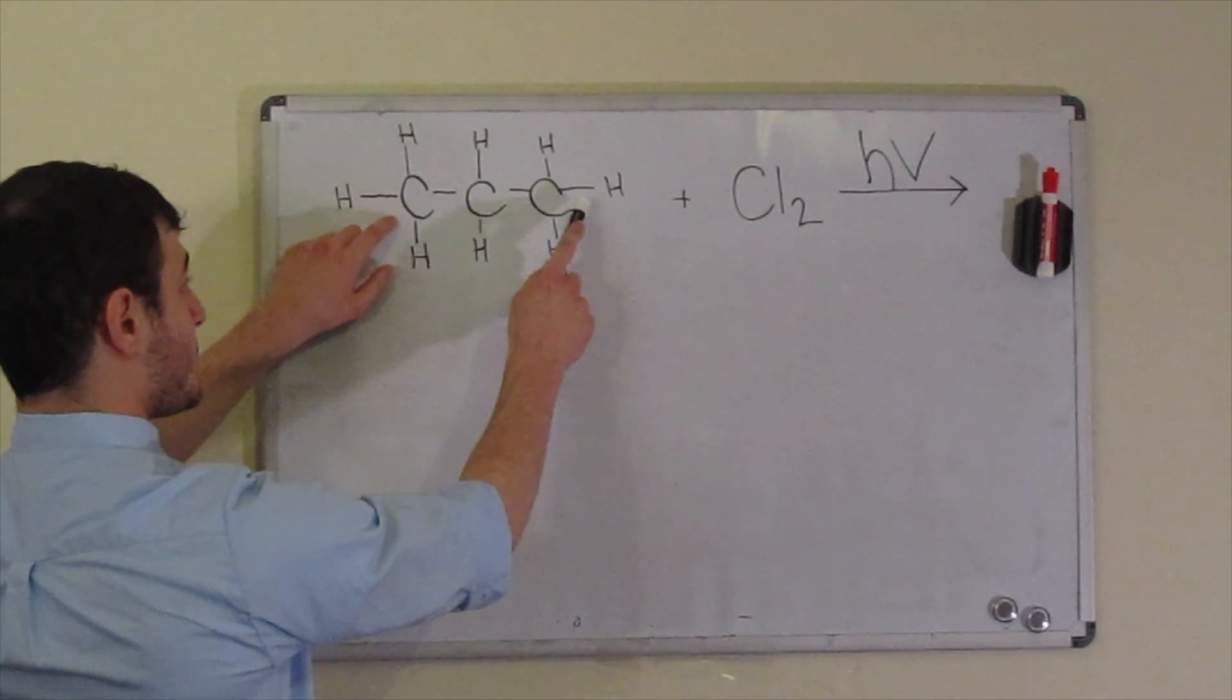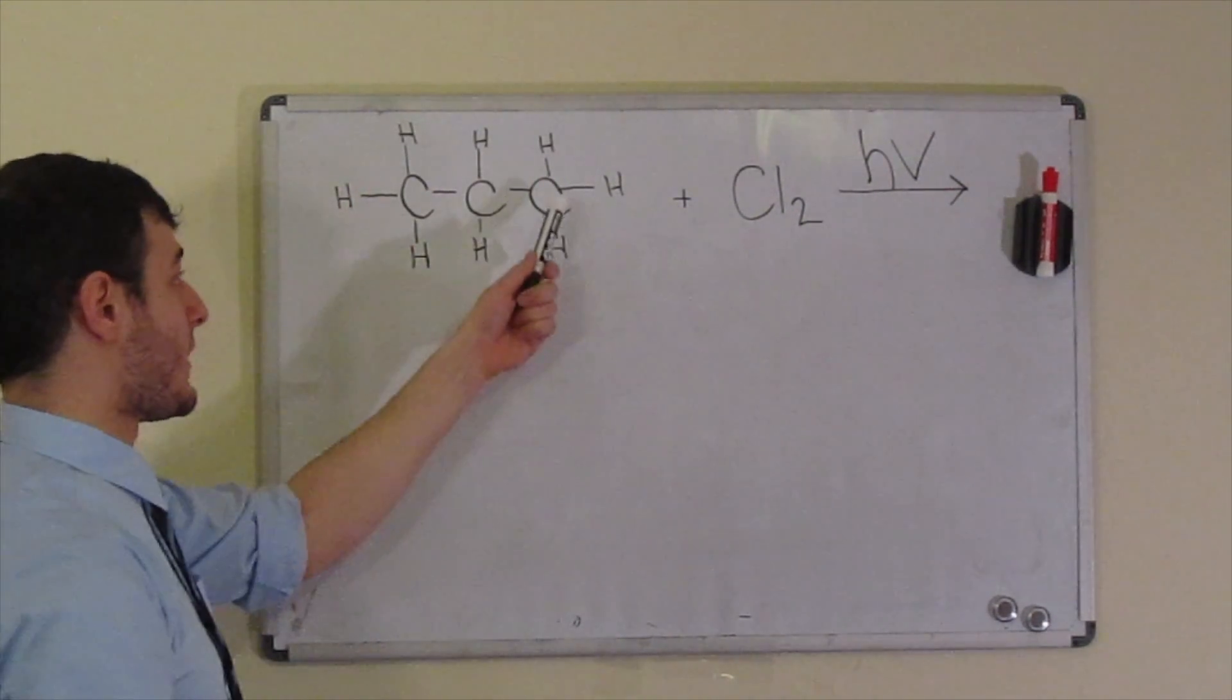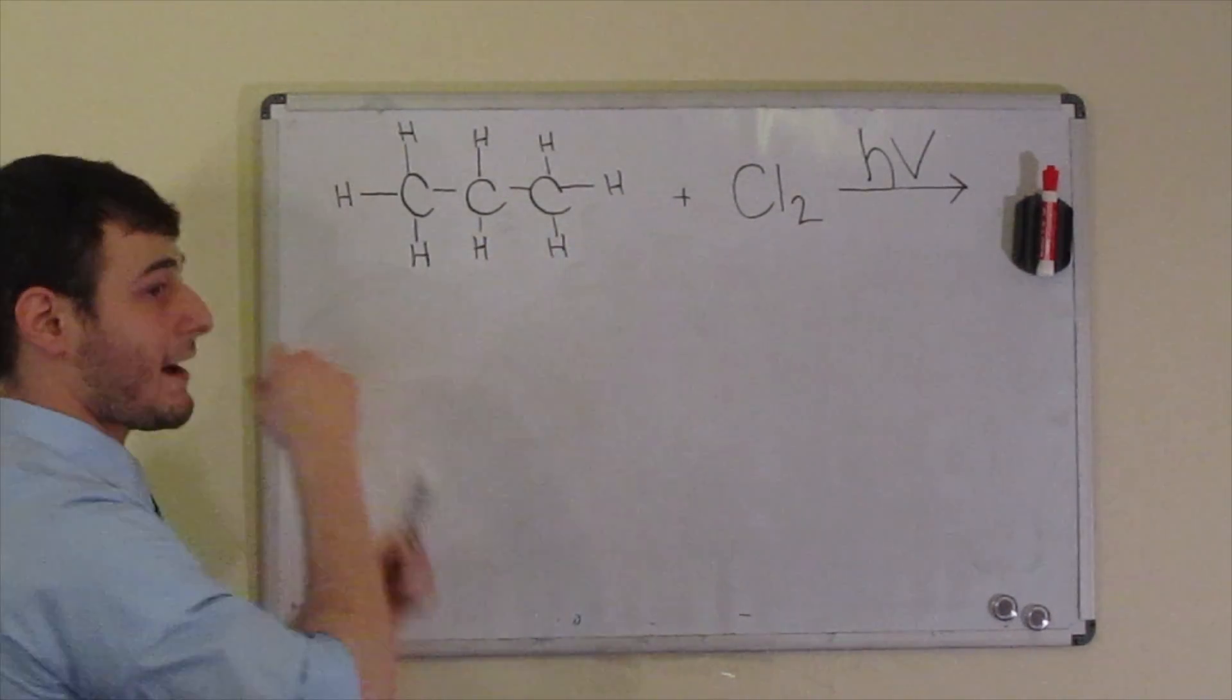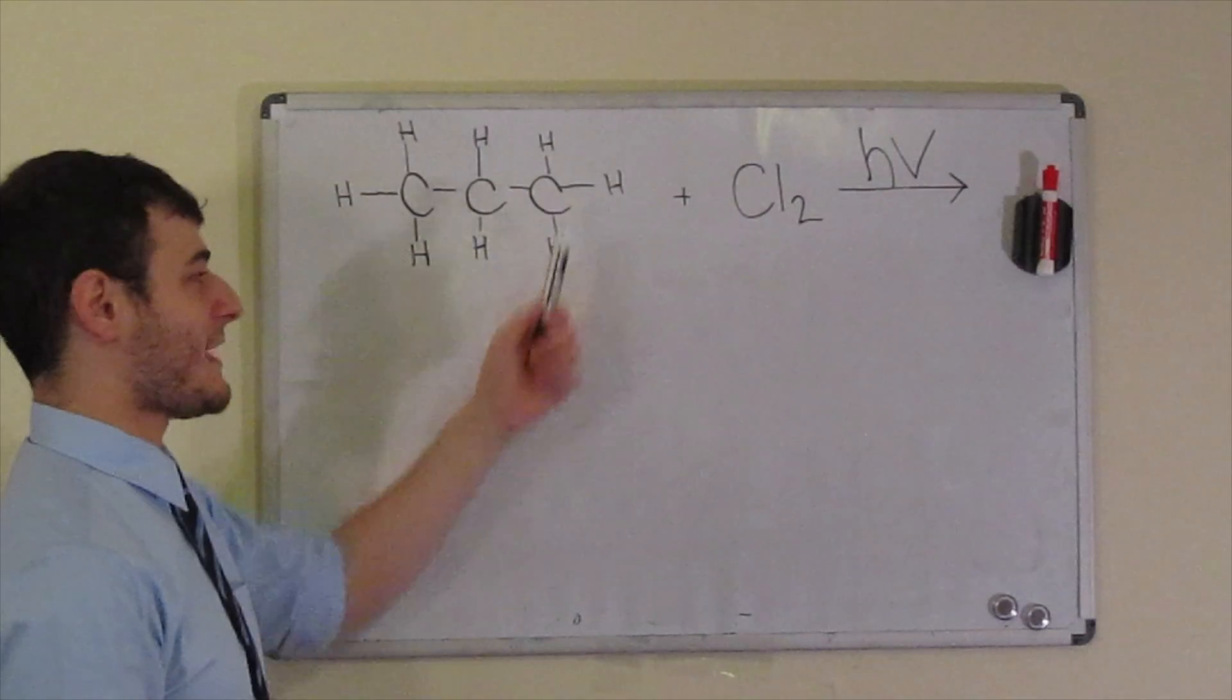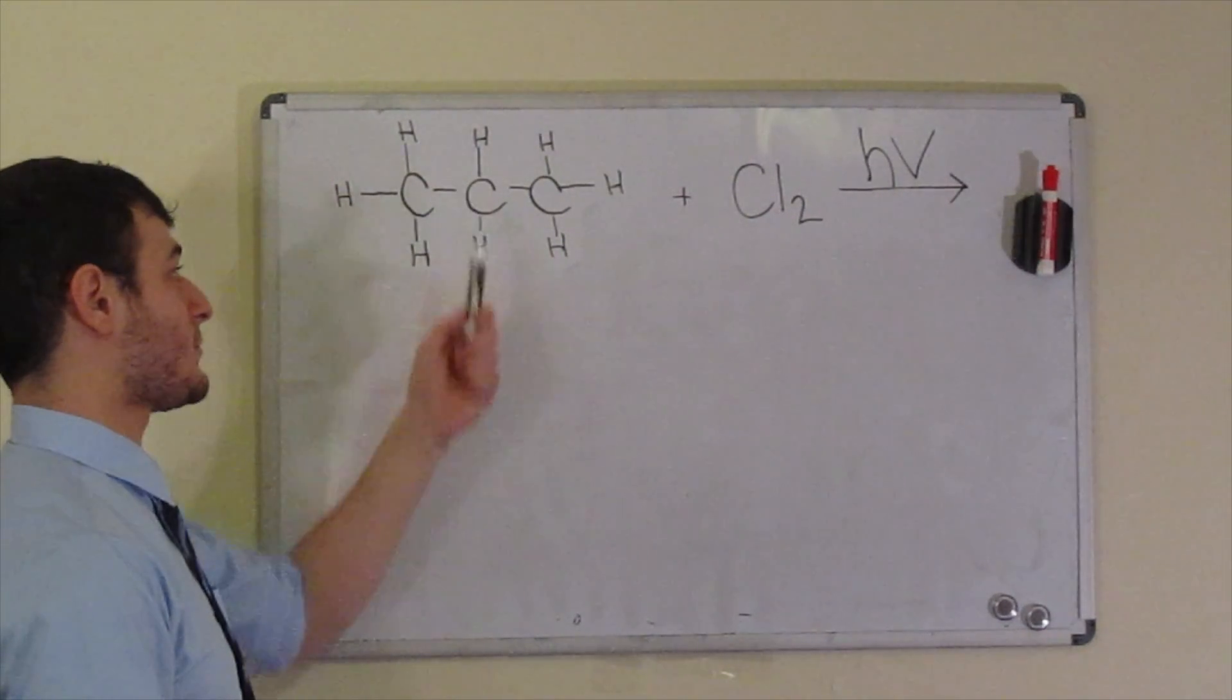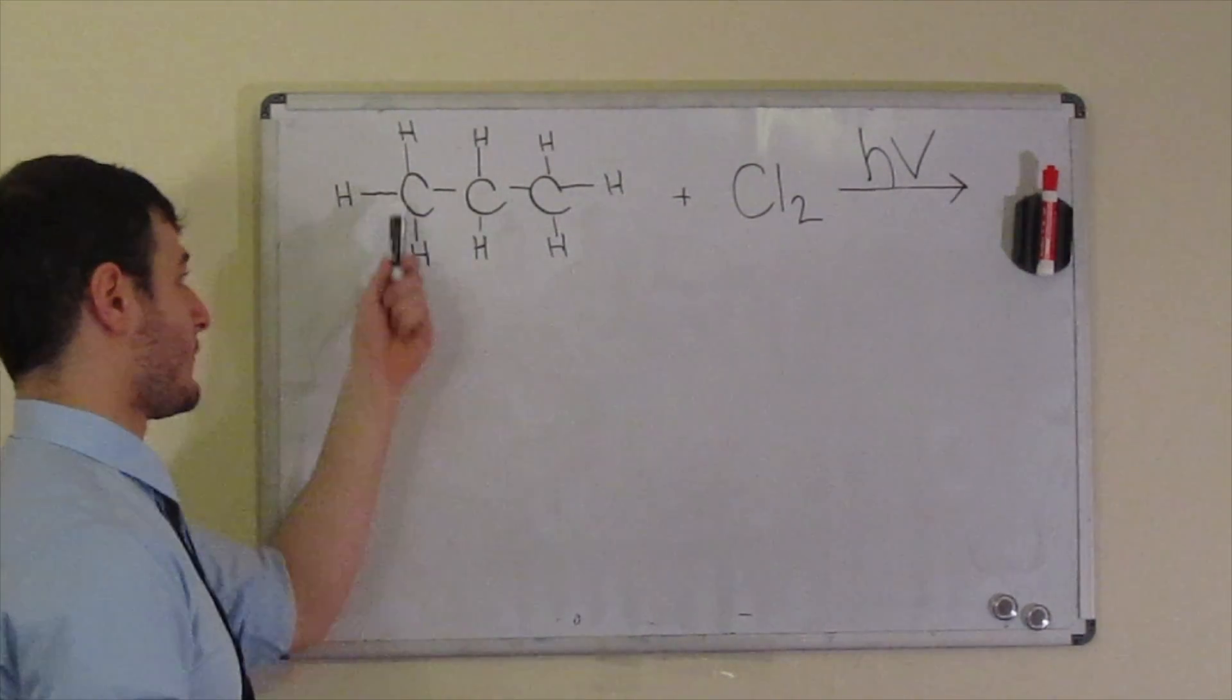It can either be one of these end ones, which you can see are the same type of carbon. There's no way to differentiate each end carbon, because if we just flip the molecule around, that carbon becomes that one, and that one becomes that one. So we call this chemically equivalent. And then we have this one here in the middle, and that one is chemically distinct from the two end ones.